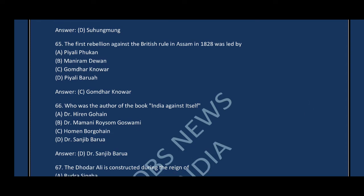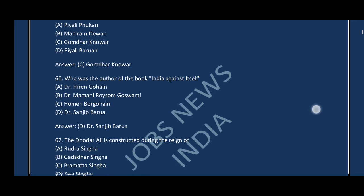Question number sixty-six: Who was the author of the book 'India Against Itself'? The correct answer is option D — Dr. Sanjib Baruah. Question number sixty-seven: The Dhodar Ali was constructed during the reign of — the correct answer is option B, Gadadhar Singha.